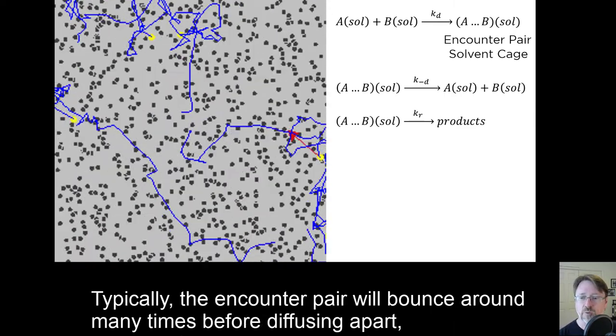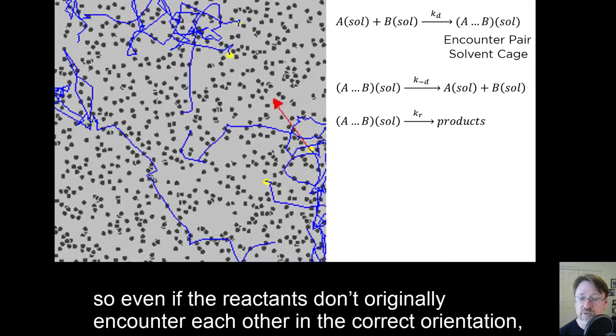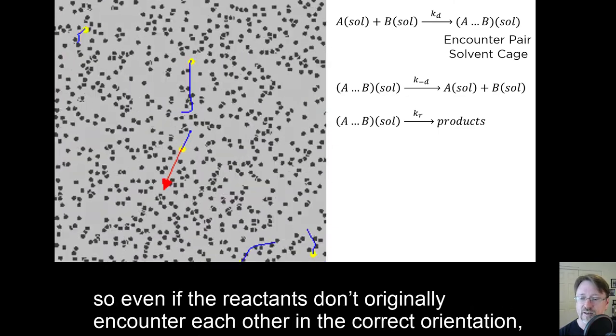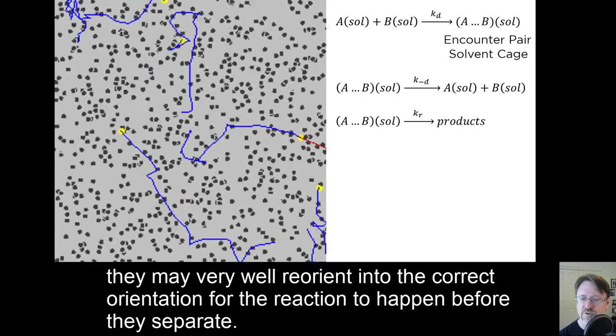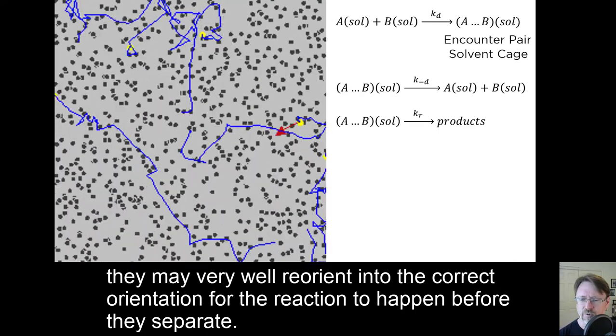Typically, the encounter pair will bounce around many times before diffusing apart, so even if the reactants don't originally encounter each other in the correct orientation, they may very well reorient into the correct orientation for the reaction to happen before they separate.